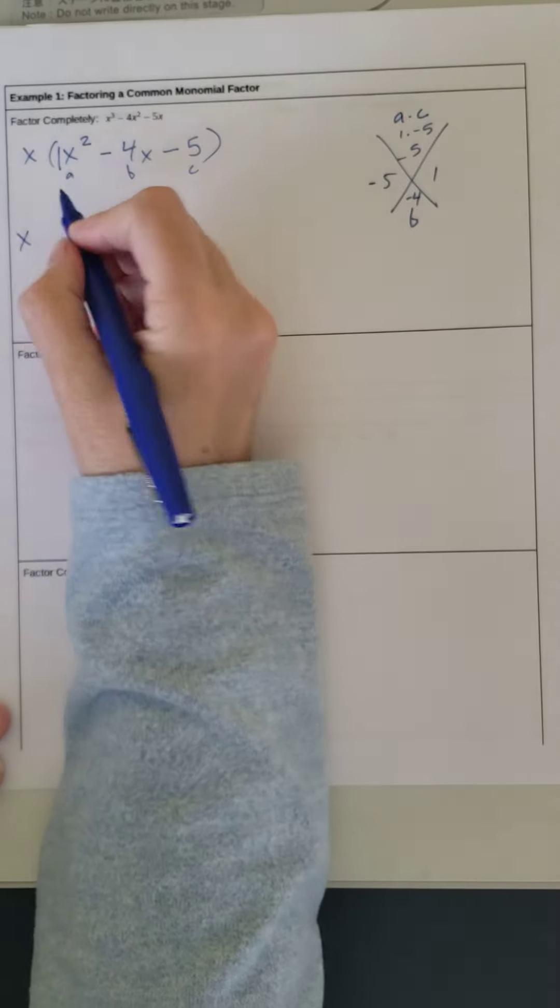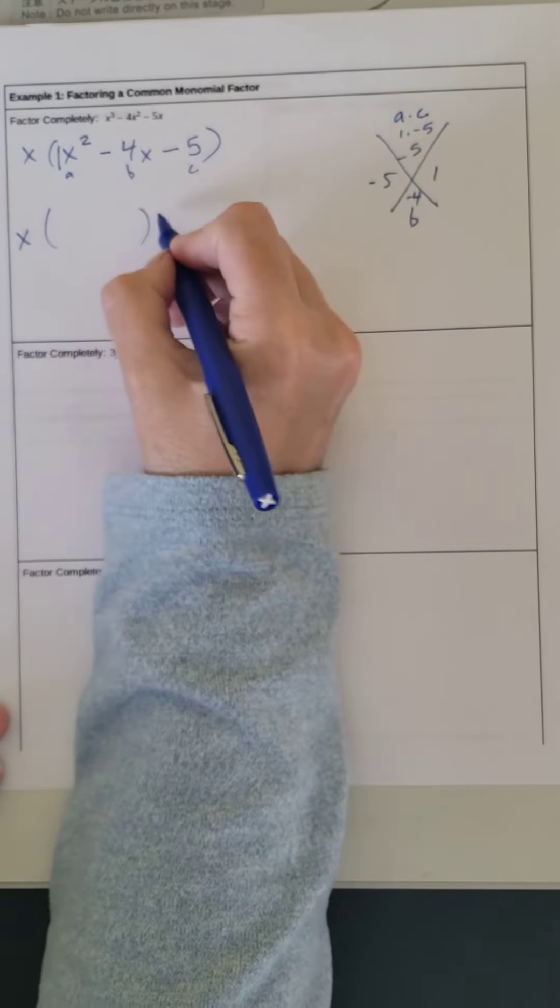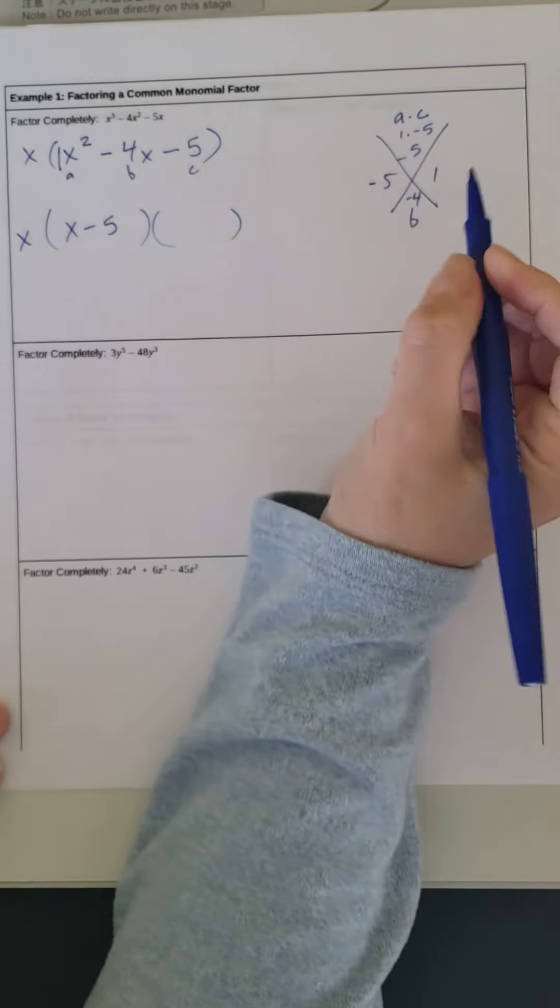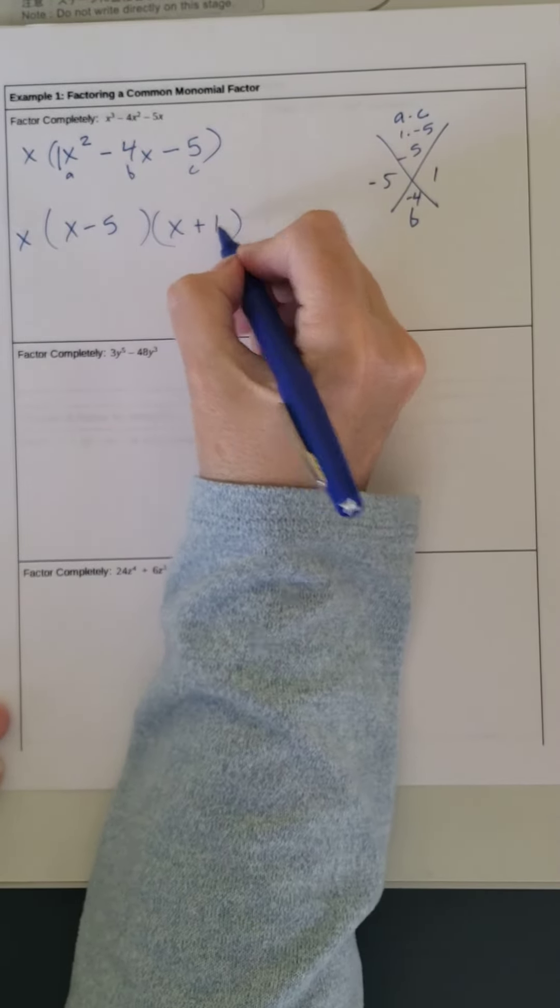So bring down your x, and then do your two sets of parentheses, and we have x minus 5, x plus 1.